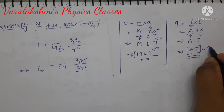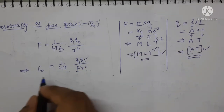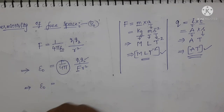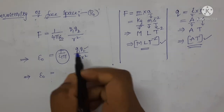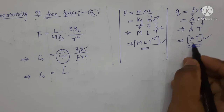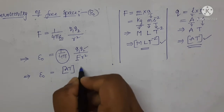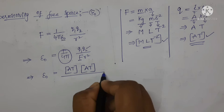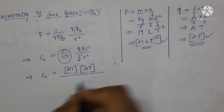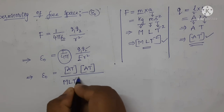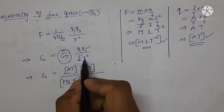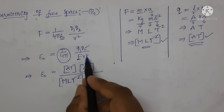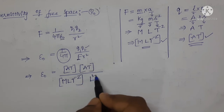Now let us substitute the values of charge and force in this equation. That implies epsilon 0 is equal to — here 1 by 4 pi is a constant value so I am leaving it. For Q1, the charge is A T; for Q2, A T. This is the dimensional formula for charges. For force, we got M L T power minus 2. Here R is the distance between the two charges, so distance is expressed in terms of length, and R square gives L square.